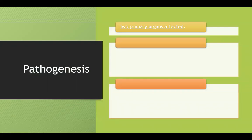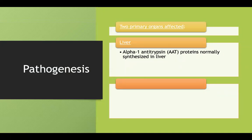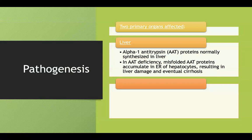The pathogenesis differs depending on which organ you're talking about — it causes damage to both the liver and the lungs. In the liver, alpha-1 antitrypsin protein is normally synthesized there. In the deficiency, that protein gets misfolded. Because it's misfolded, it starts to accumulate in your hepatocytes — first in the endoplasmic reticulum, then in other organelles. Ultimately, all that misfolded protein overwhelms your hepatocytes and causes liver damage and cirrhosis.